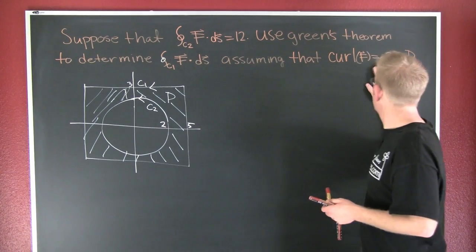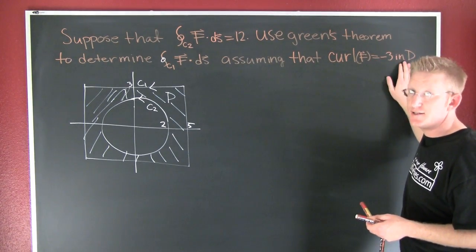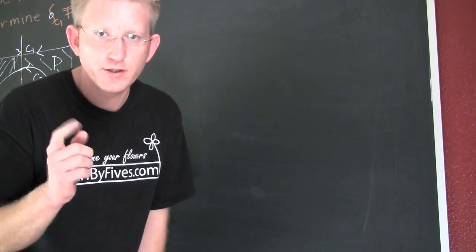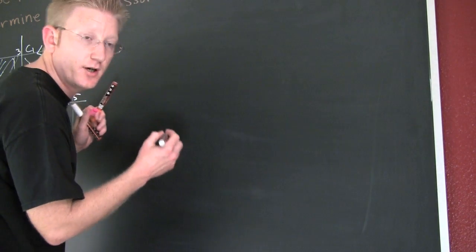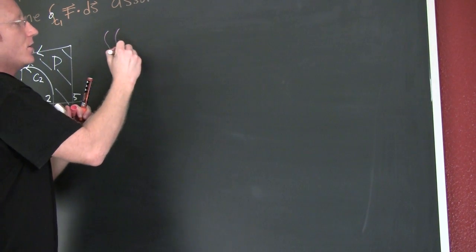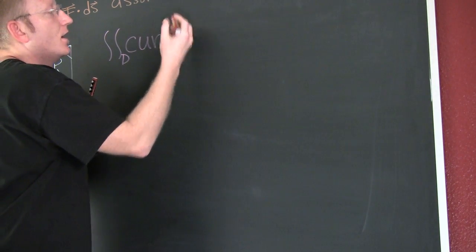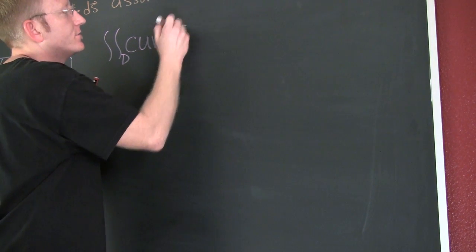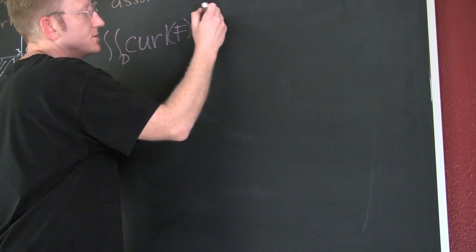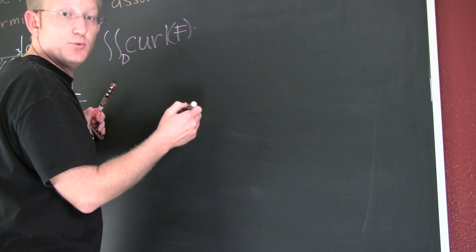We're going to assume that the curl of F is minus 3 in D. So what we're looking for is the double integral over D of the curl of F dot DS, or DA in this case, which happens to be DYDX.